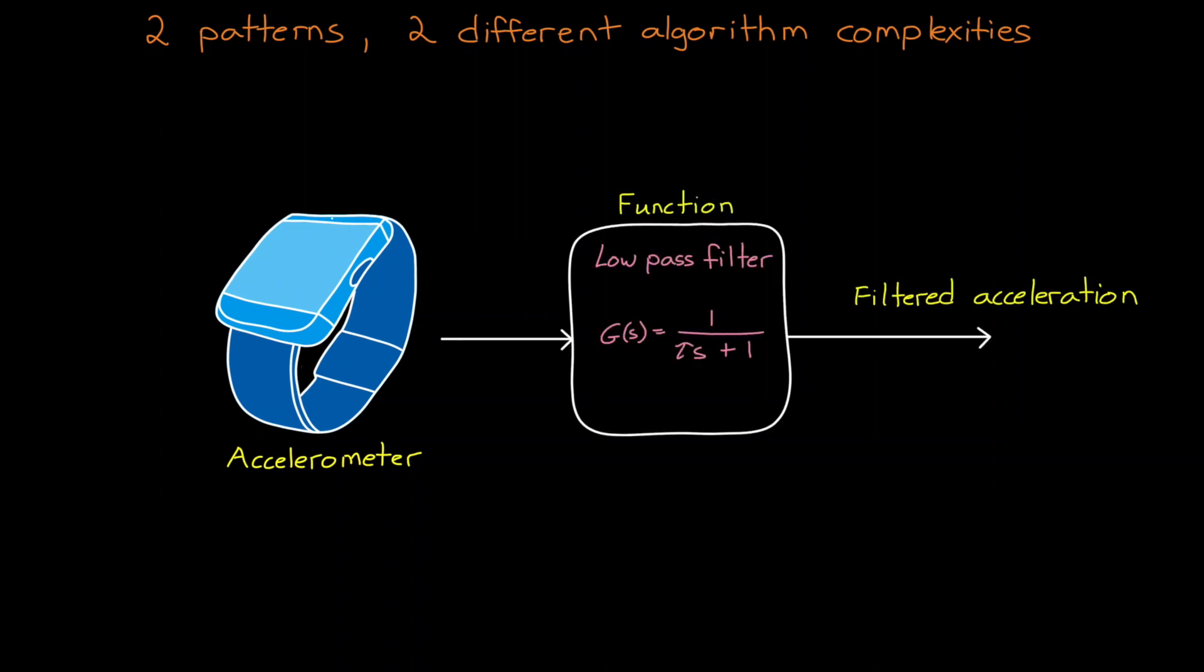In this case, the pattern we're looking for is essentially the true acceleration. The function that generates it might just be a low-pass filter to remove any high-frequency noise. So in this case, it's a pretty simple function, and one that could easily be designed with traditional methods. And by traditional methods, I'm generally referring to any method that doesn't rely on some form of machine learning.